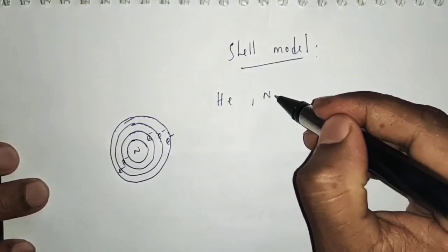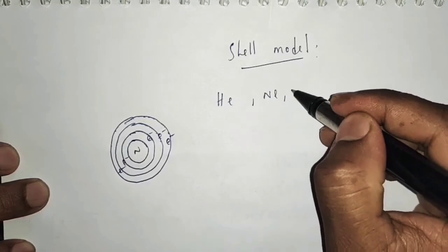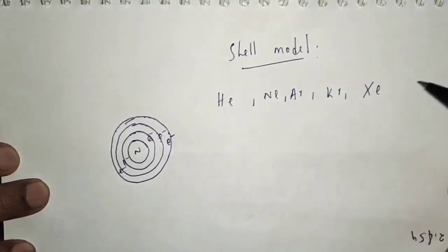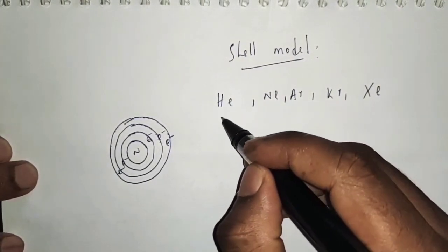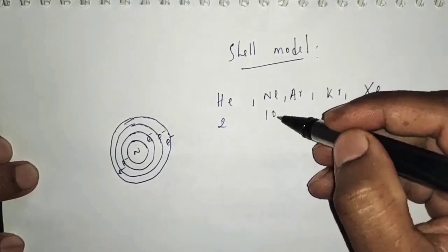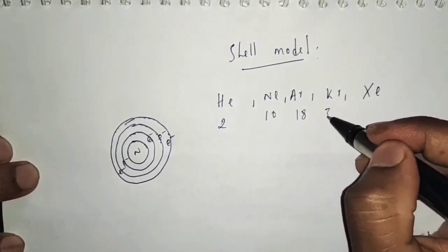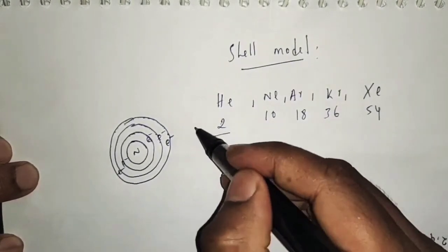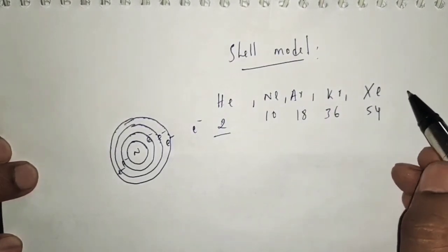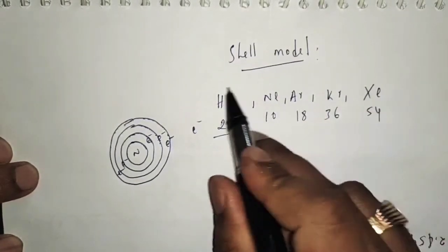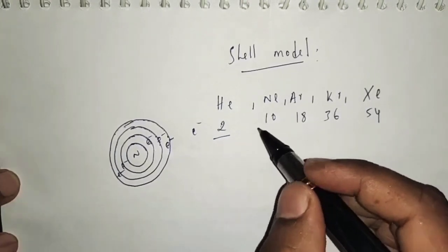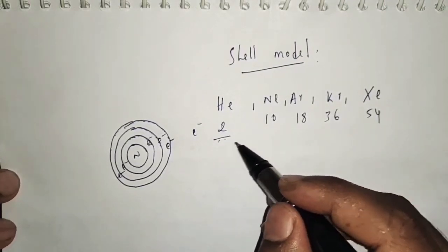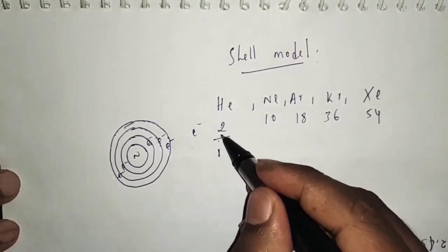Atoms such as helium, neon, argon, krypton, and xenon — which have electron numbers 2, 10, 18, 36, and 54 — are more stable compared to other atoms. In these atoms the electron shells are completely filled.